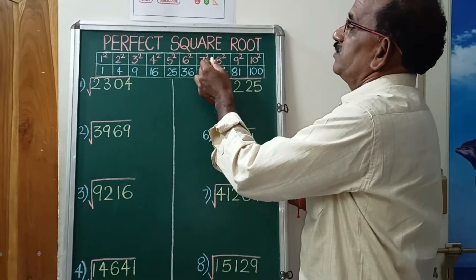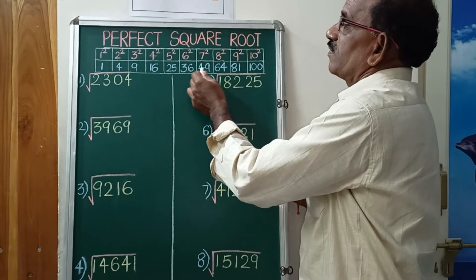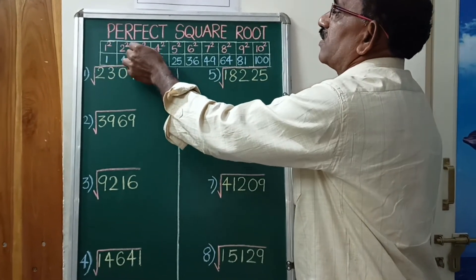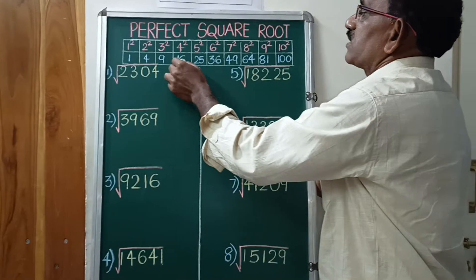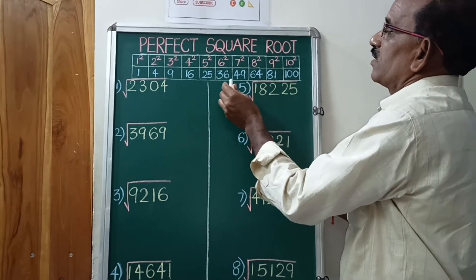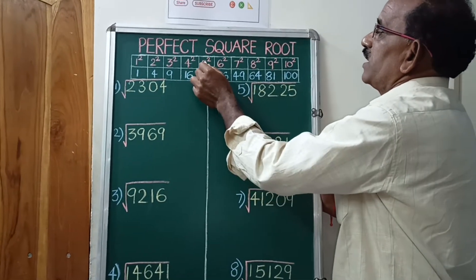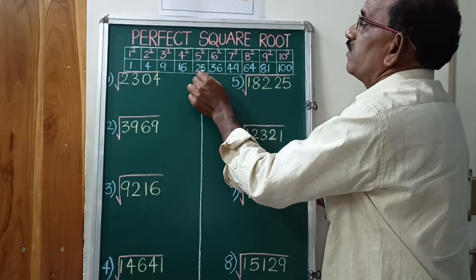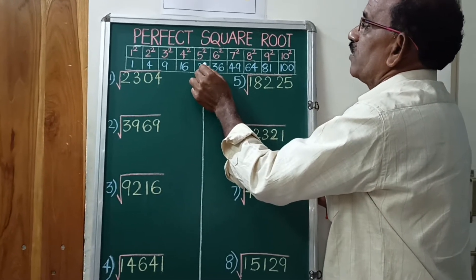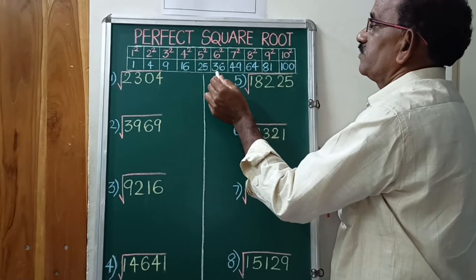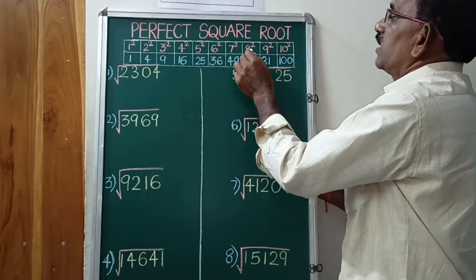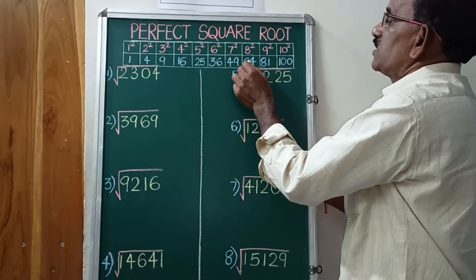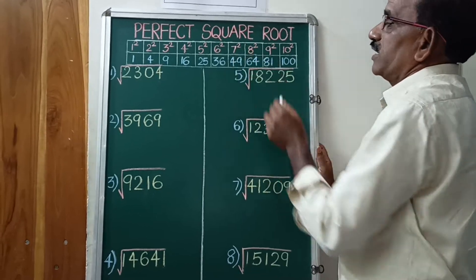Perfect squares review: 1 squared is 1, 2 squared is 4, 3 squared is 9, 4 squared is 16, and so on. 5 squared equals 25, so the square root of 25 equals 5. 8 squared equals 64, so the square root of 64 equals 8.